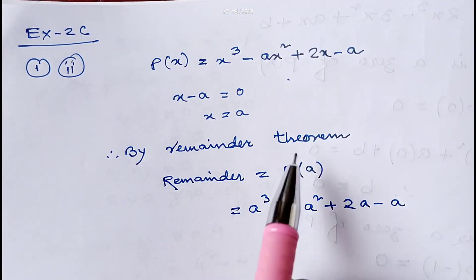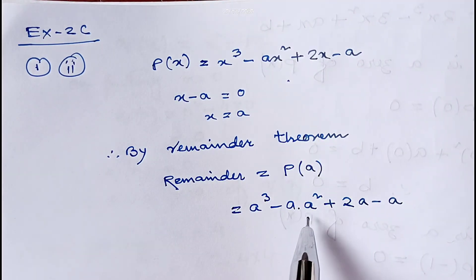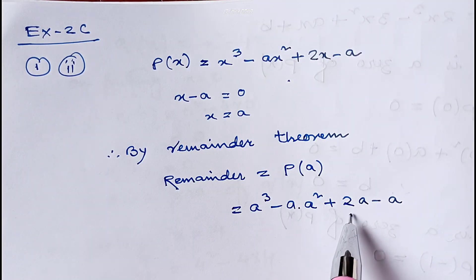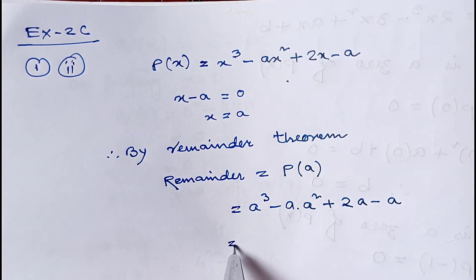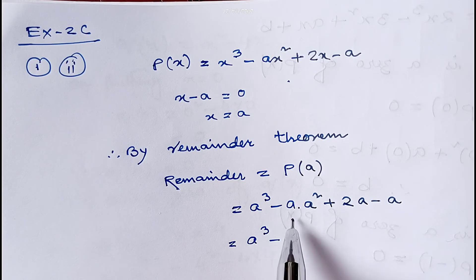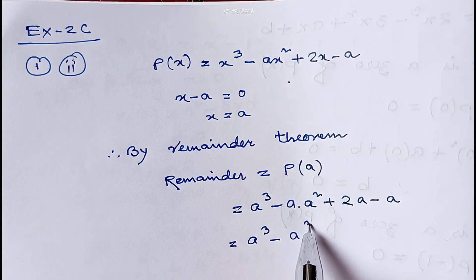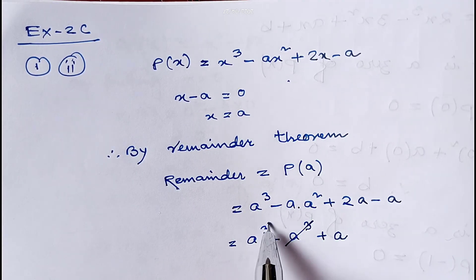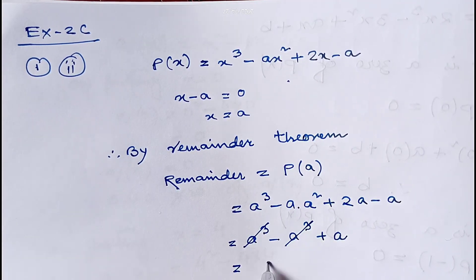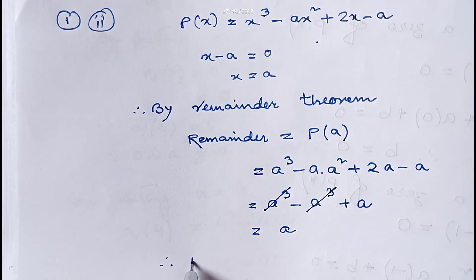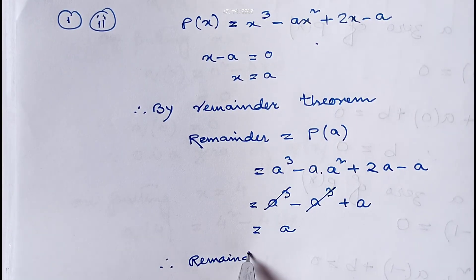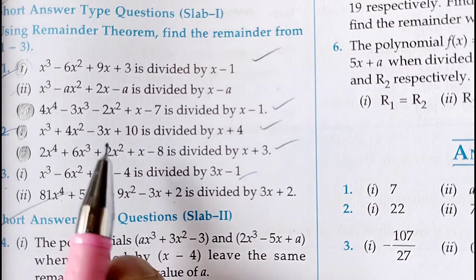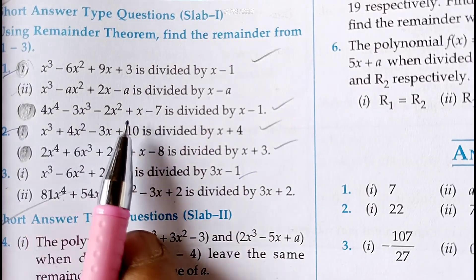Replacing x by a: it will be a³ - a × a² + 2a - a. So it becomes a³ - a³ + 2a - a. This a³ and a³ cancel, leaving 2a - a = a. Therefore the remainder is a.